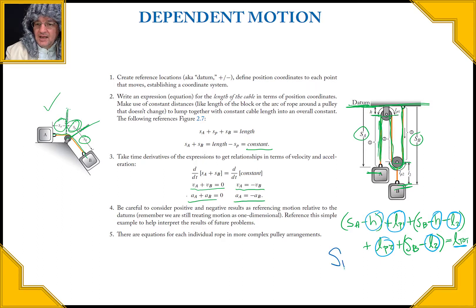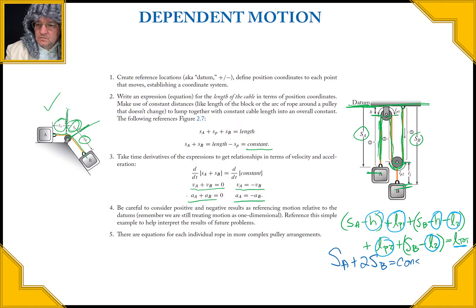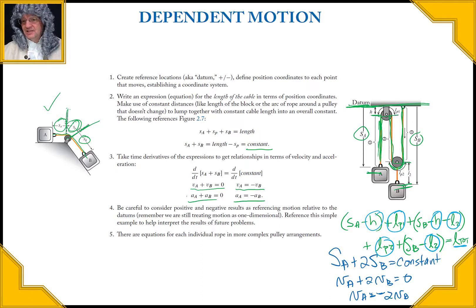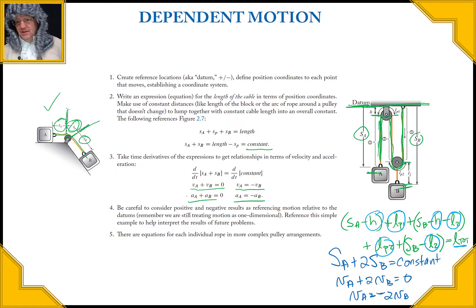Taking the derivatives, we have VA plus 2VB equals zero, therefore VA equals negative 2VB. What we're saying is that the velocity of A is going to be in the opposite direction of the velocity of B, and is going to be twice the speed of B. That's the idea of dependent motion.